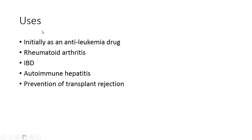The uses of azathioprine are many. Initially it was used as an anti-leukemia drug; however, nowadays there are much more potent and reliable drugs used instead. It is still used for rheumatoid arthritis, inflammatory bowel disease, autoimmune hepatitis, and prevention of transplant rejection.